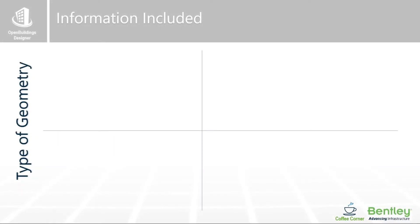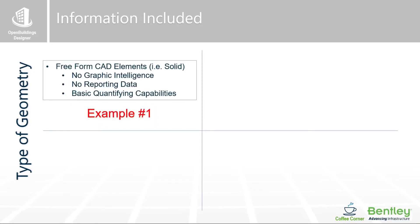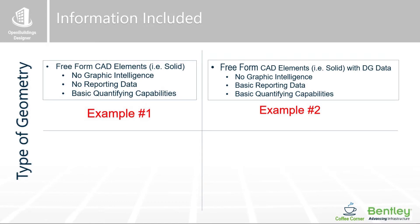Your choice of geometry governs the kind of information and feedback that you get from Open Buildings Designer. I've got some illustrated examples. If you think about traditional dumb geometry modeling familiar in most CAD packages, you can draw something that represents a wall or a slab, but the reporting capabilities are basic — you may not get material information or classification, and anything like that might have to be done manually.